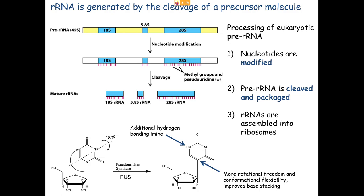To review rRNA processing: we protect regions with methyl groups and other modifications such as pseudouridines. Ribonucleases come along and chew up whatever is accessible — the non-heavily-modified regions. What's left is three independent pieces that can fold up on their own after exiting the nucleus. The 28S and 5.8S go on to make the large subunit, and the 18S folds along with some proteins to make the small subunit.